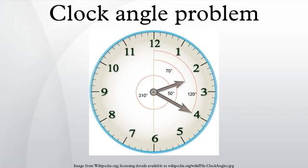A method to solve such problems is to consider the rate of change of the angle in degrees per minute. The hour hand of a normal 12-hour analog clock turns 360 degrees in 12 hours or 0.5 degrees per minute. The minute hand rotates through 360 degrees in 60 minutes or 6 degrees per minute.